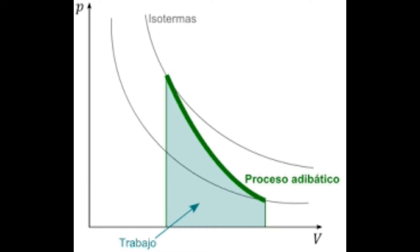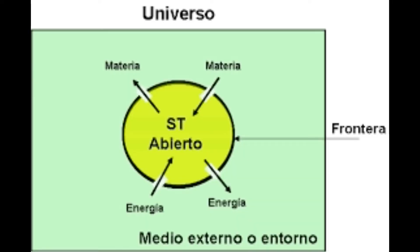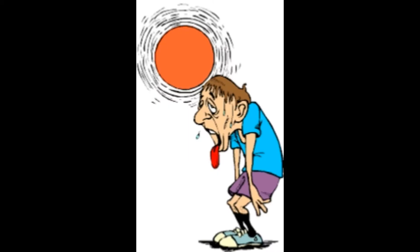En general, podemos decir que los seres vivos no son sistemas en equilibrio. Estos organismos son organismos abiertos que intercambian energía y materia con el entorno. Por lo tanto, podemos decir que el calor que producimos es igual al calor que perdemos.